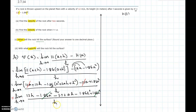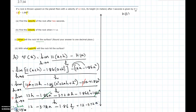Now we divide every term by h in the denominator. 12h/h = 12, -3.72ah/h = -3.72a, and -1.86h²/h = -1.86h. Now h is allowed to approach 0, so the term -1.86h becomes 0. The remaining terms give us velocity at a: v(a) = 12 - 3.72a meters per second.